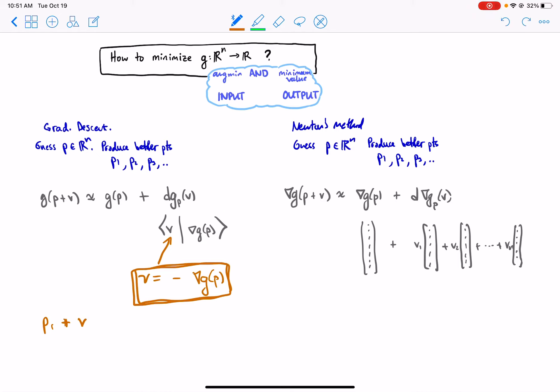Our point P1 will be equal to P plus V, where V is just—we didn't have to solve for V, we just choose V so that we get a negative number. P1 should be equal to our guess plus V, and then we just repeat this entire process.